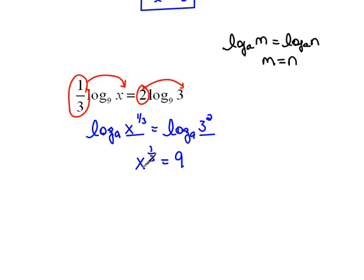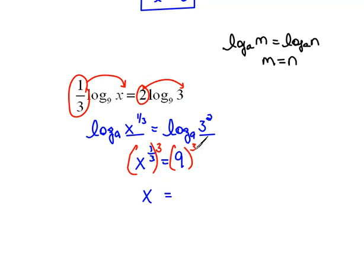Now we need x alone, not x to the 1/3 power — I really need this to be x to the 1st power. The way to do that is to raise everything to the 3rd power, because 1/3 times 3 — power to a power, you multiply — gives 1. So this would now be x to the 1st power equals 9 to the 3rd power, which is 9 times 9 times 9, which would be 729.